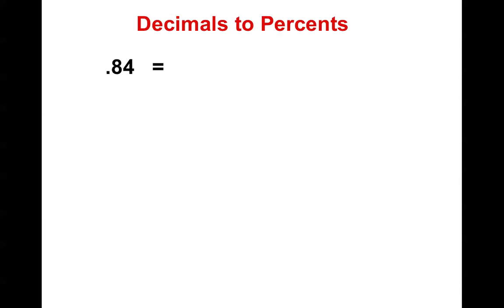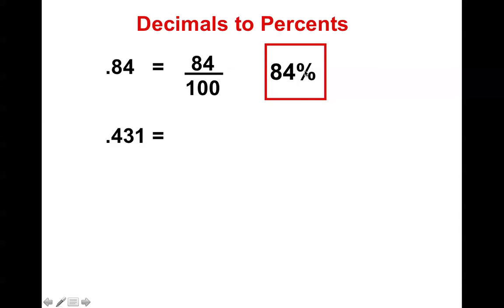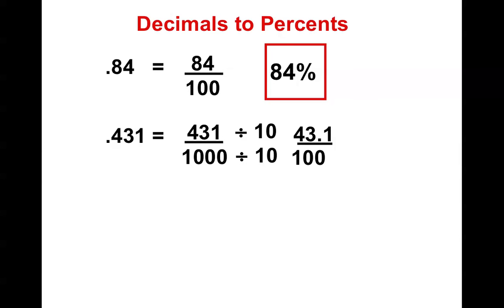Now I'm going from decimals to percents. So if I have 84 hundredths, if I write it as a fraction, it makes it very obvious what my percent would be. Because whenever you have a denominator of 100, the numerator is the percent. I have 431 thousandths, but I need the denominator to be 100, so I divide by 10 and divide by 10, and I get 43.1 over 100 — and so that is the number that is my percent.